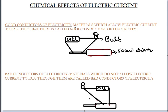Now we have two setups. This contains a screwdriver, bulb and cell. In the first case we will join the wire to the metal part of the screwdriver. In this case we will see that the bulb will glow after some time. But in the second case the bulb will not glow when we connect the wire through the wood part of the screwdriver.